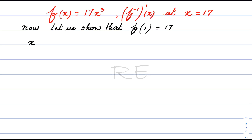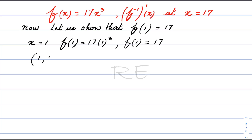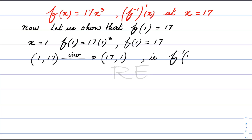When x is equal to 1, f of 1 is equal to 17 times 1 cubed. Therefore, f of 1 is equal to 17. Now, if (1, 17) is on the curve, its inverse will be (17, 1) — we swap x for y. Which means the inverse of f of 17 is equal to 1.